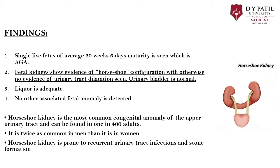A few points about horseshoe kidney: it is the most common congenital anomaly of the upper urinary tract, found in 1 in 400 adults, and is twice as common in men than in women. Horseshoe kidney is prone to recurrent urinary tract infections and stone formation.